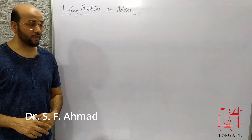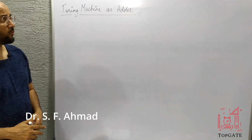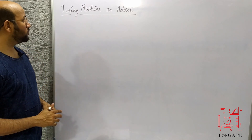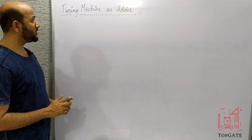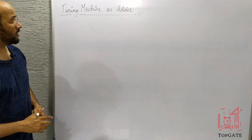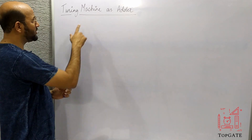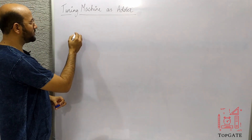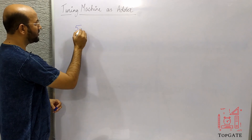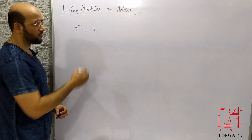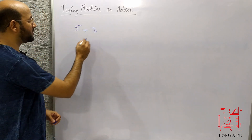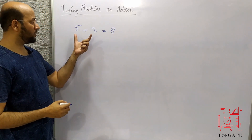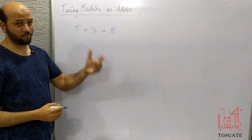Welcome to the channel Top Gate. Today we are going to discuss one more Turing machine problem: to show that the Turing machine acts as an adder. An adder is a machine which can add two numbers. Suppose we have five and three — five plus three equals eight. The Turing machine is capable of adding these two numbers.